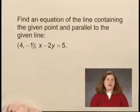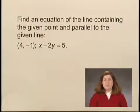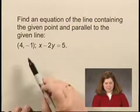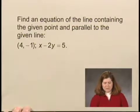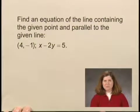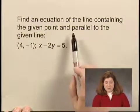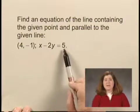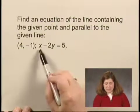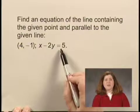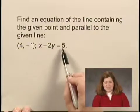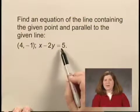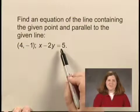In order to find an equation of a line, we need to know a point on the line and the slope of the line. We're given a point on the line, but at first glance it doesn't appear that we're given the slope — until we remember that if the line is parallel to this line, it has to have the same slope. So if we find the slope of this line, we will know the slope of the line we're trying to find an equation for.